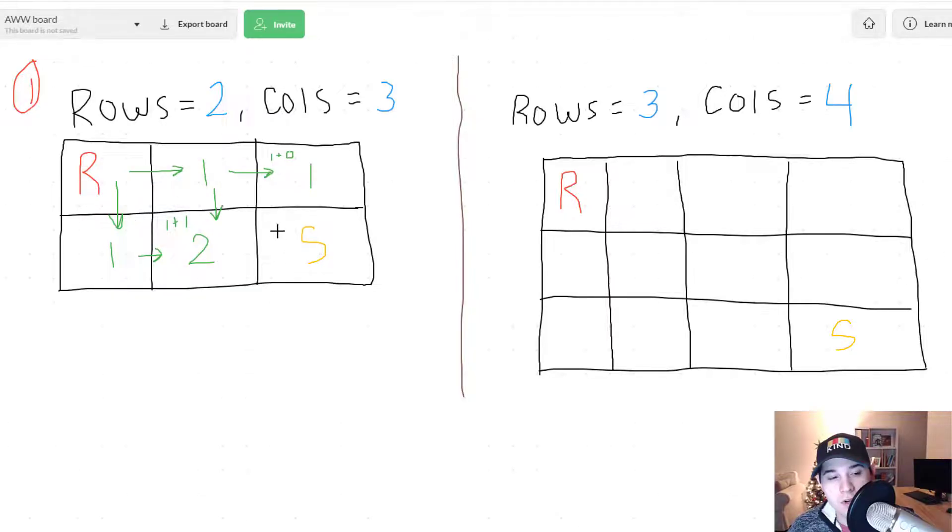And so finally we have our bottom right corner and we just do the sum. So one we look above us and then two to the left of us. So that would be three. So that's where we get that number three from.